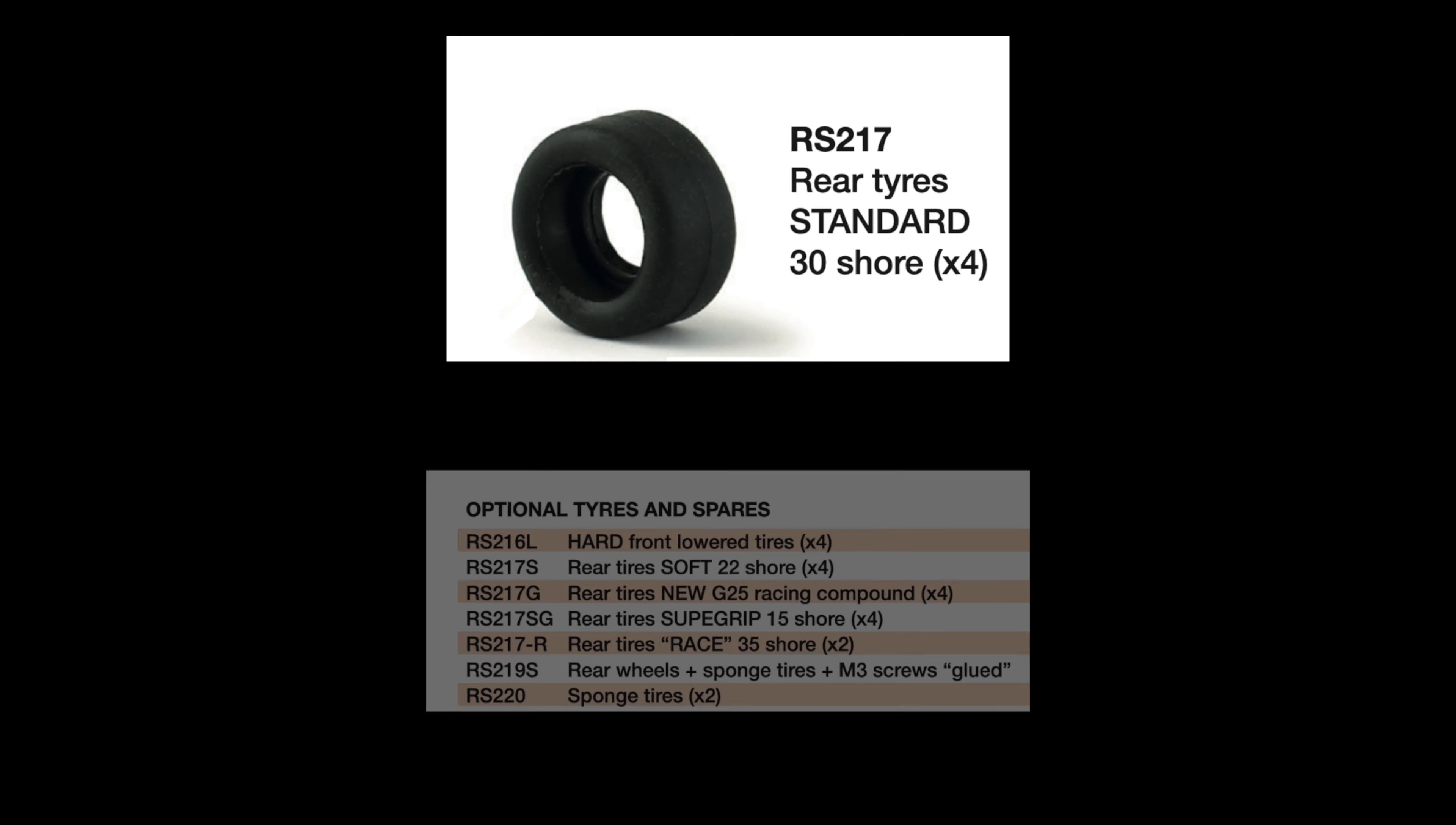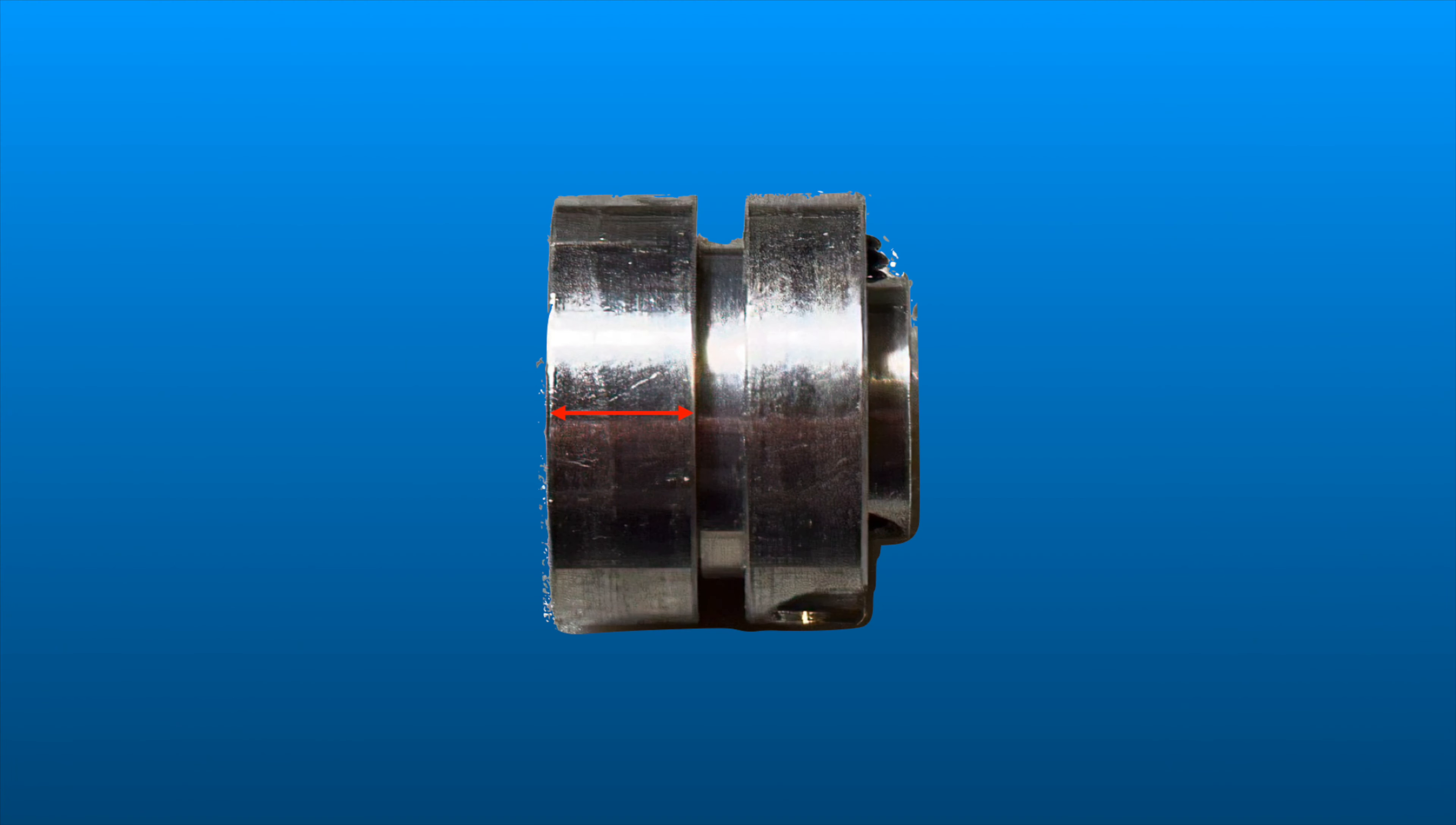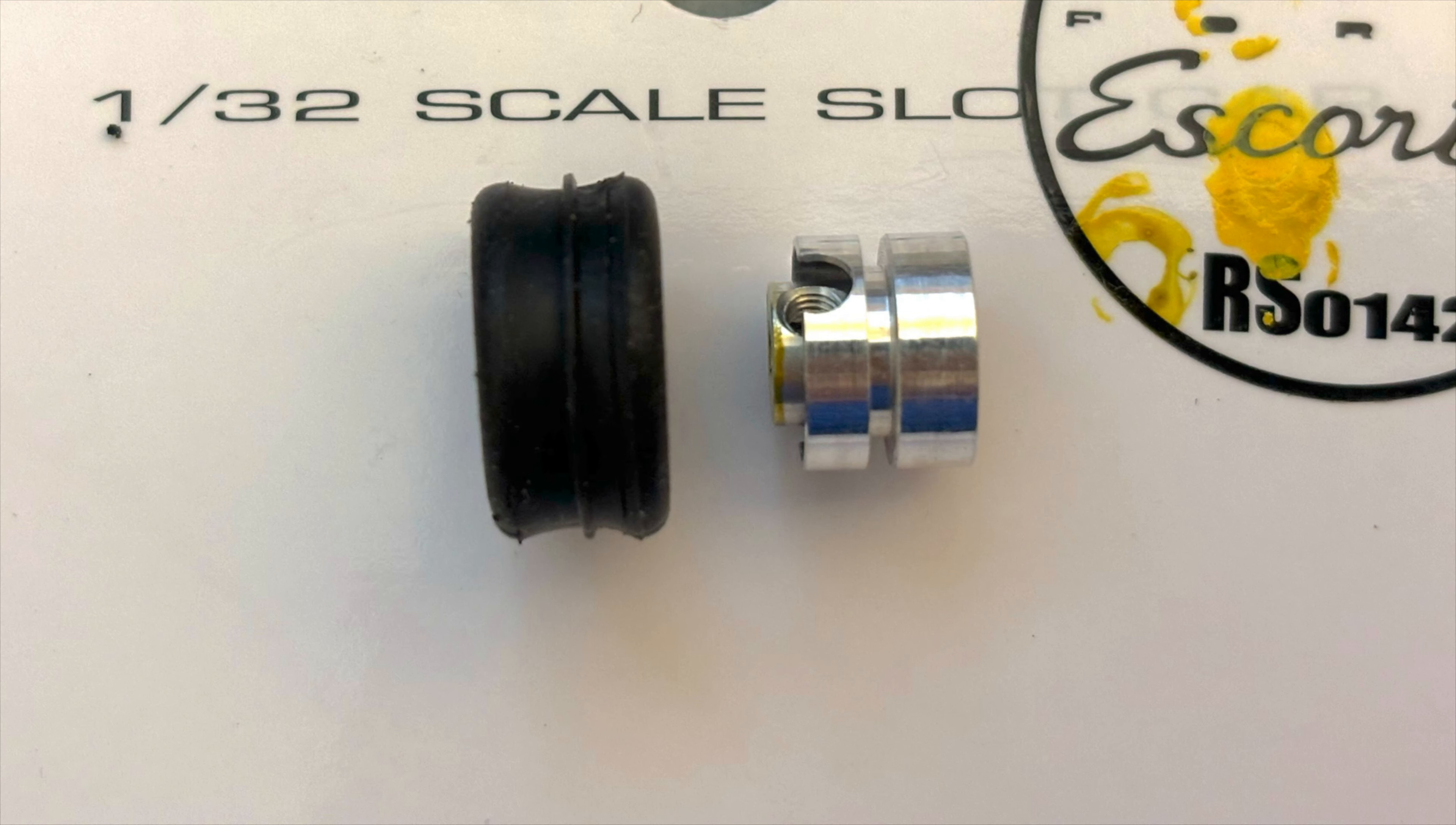The stock tires are 30 shore and they work fine, but I do have a set of G25 tires mounted up when I need a little bit more grip on some more home tracks. When you're mounting your tires, keep in mind that the rib in the center of the tire that mates with the wheel is not in the center, so you can put the tires on backwards.